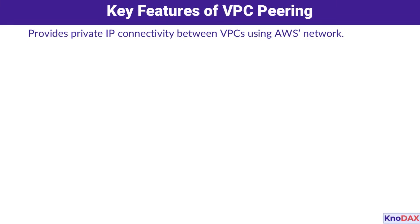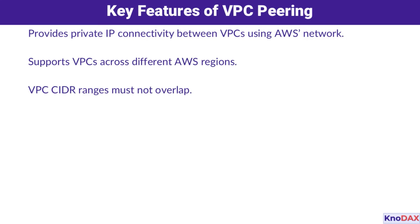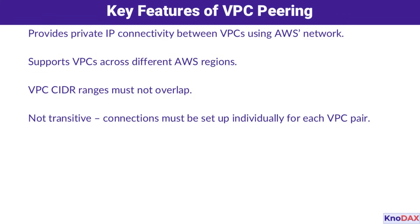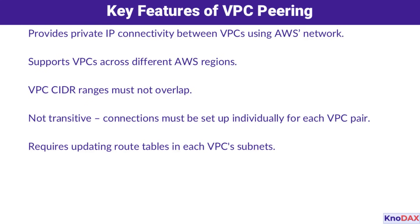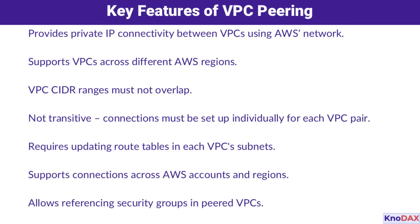Finally, let's cover some key features. It provides private IP connectivity between VPCs using AWS's secure network. Peering can work across different AWS regions, which is called inter-region VPC peering. The CIDR ranges of the two VPCs must not overlap. It's not transitive, so you'll need individual connections for each pair of VPCs. You'll need to update route tables in the subnets for connectivity. You can connect VPCs across AWS accounts and even reference security groups in the peered VPCs. Pretty flexible, isn't it?